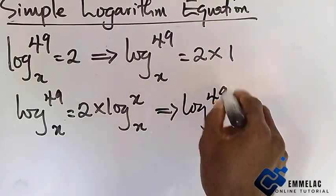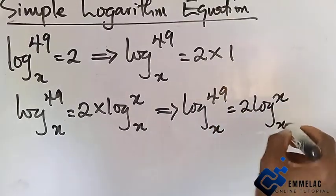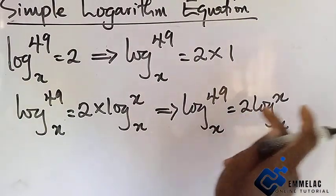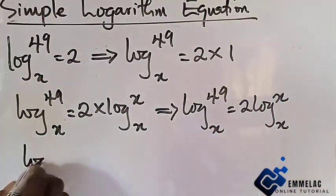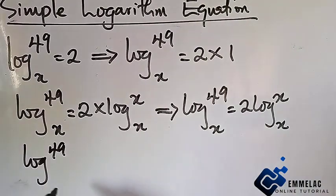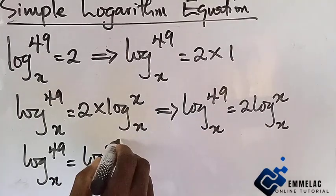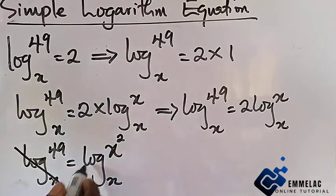Here we have log 49 base x equals 2 log x base x. To further simplify this, this 2 becomes the power of x, which proceeds to log 49 base x. Now you can see that the two sides of the equation are now having the same log base, so we cancel these out.